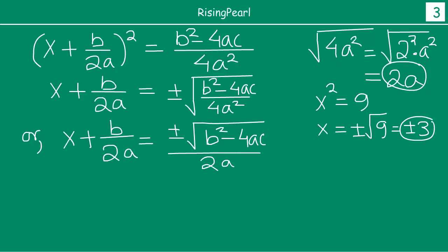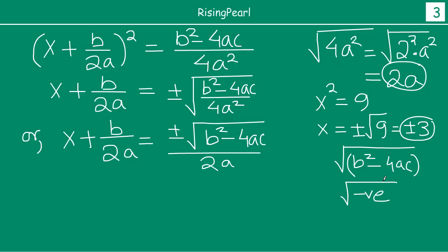At this point, friends, I would like you to pause and realize: if this value B² minus 4AC becomes negative — that is, if we have the square root of a negative number — then this value depends on your coefficients A, B, and C. If your quadratic equation is such that this value turns out to be negative, we cannot proceed forward, because we cannot have the square root of a negative value. We will not have any real roots.